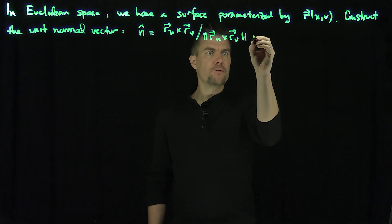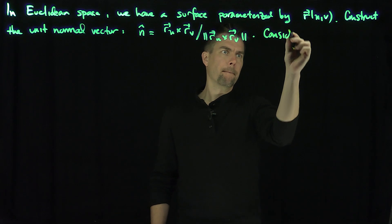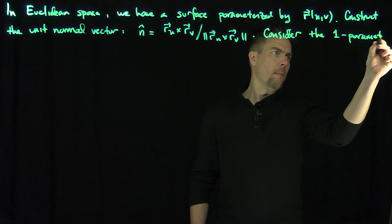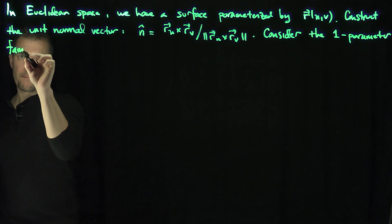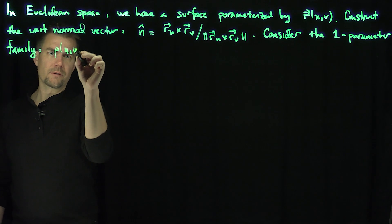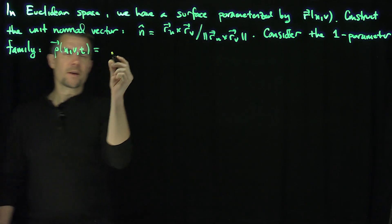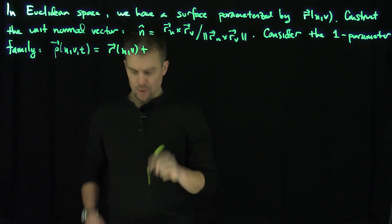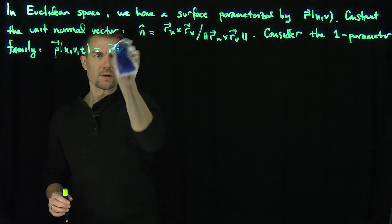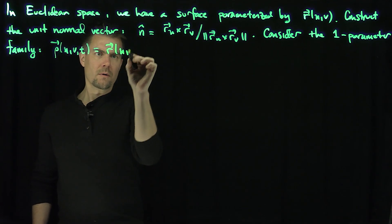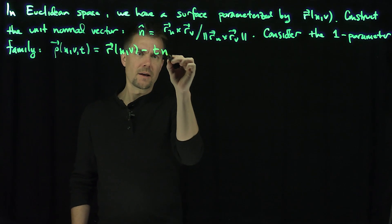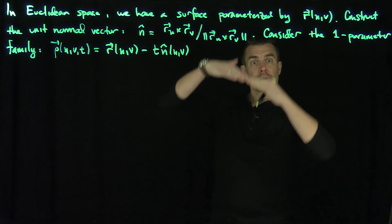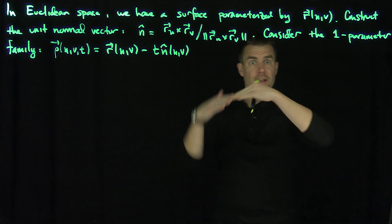Now we can consider a new one-parameter family of surfaces. Consider the family rho of u, v, and t given by r of u, v plus t times n-hat of u and v. So I'm looking at a family of surfaces that are basically just shifts of the surface along the normal direction — moving the surface along the normal vector.